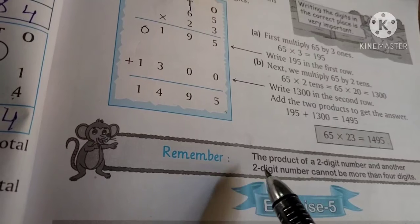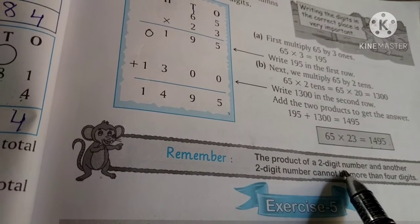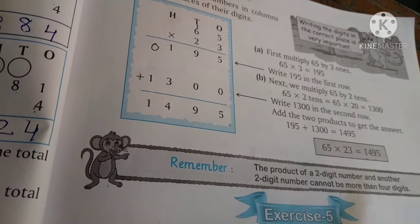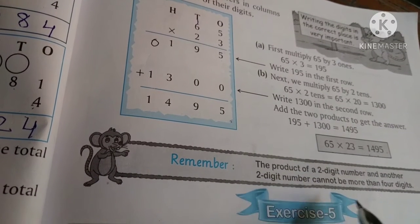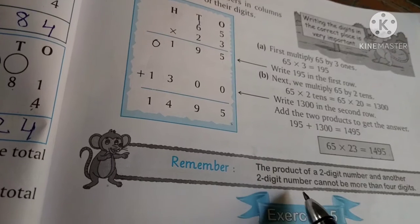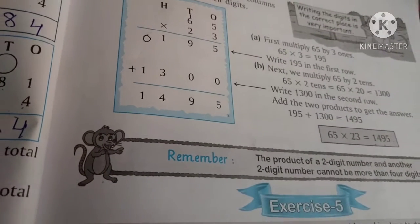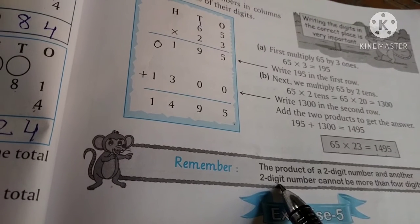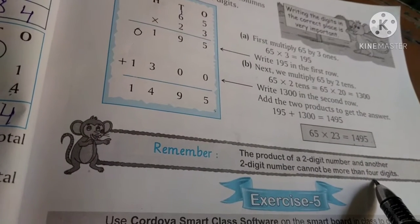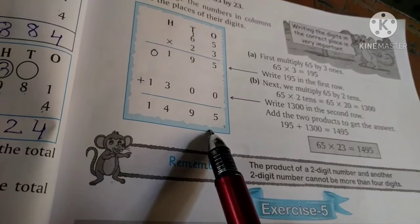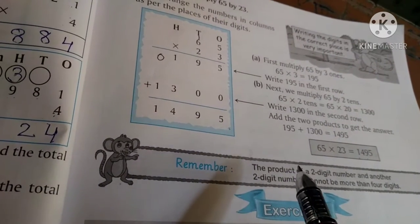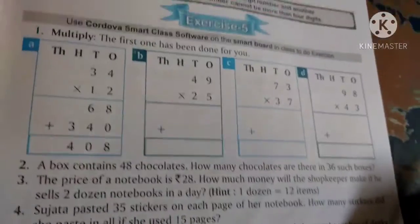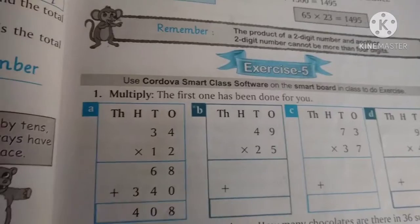Remember: the product of a 2-digit number and another 2-digit number cannot be more than 4 digits. If the answer is more than 4 digits, then your answer may be wrong. Now let us start with our exercise. This exercise is from textbook page number 61, Exercise number 5.